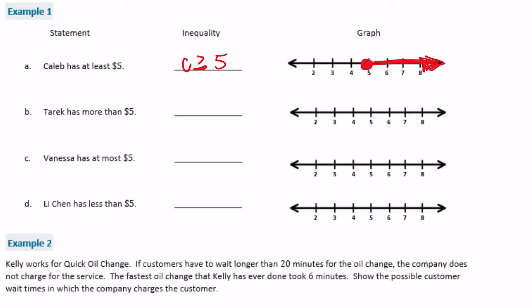Part B: Tarek has more than five dollars, so Tarek is greater than five dollars. His graph looks a little different from Caleb's because I leave an open circle on five — he could have five dollars and twenty-five cents, but not exactly five dollars. That's the difference: Caleb's graph includes five dollars, Tarek's does not.